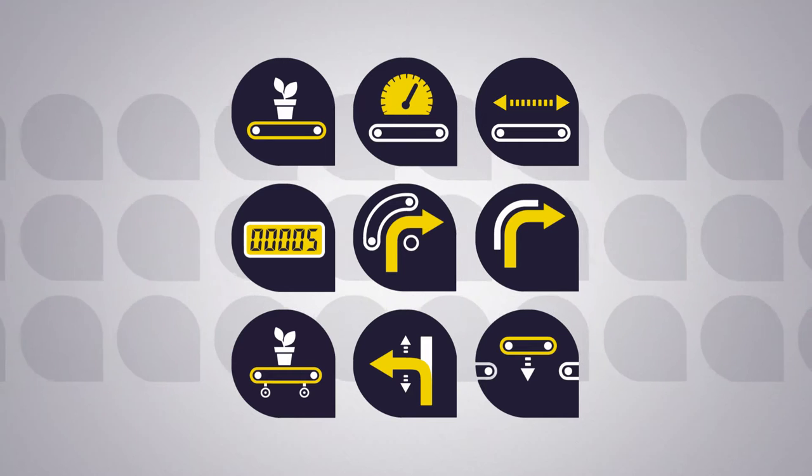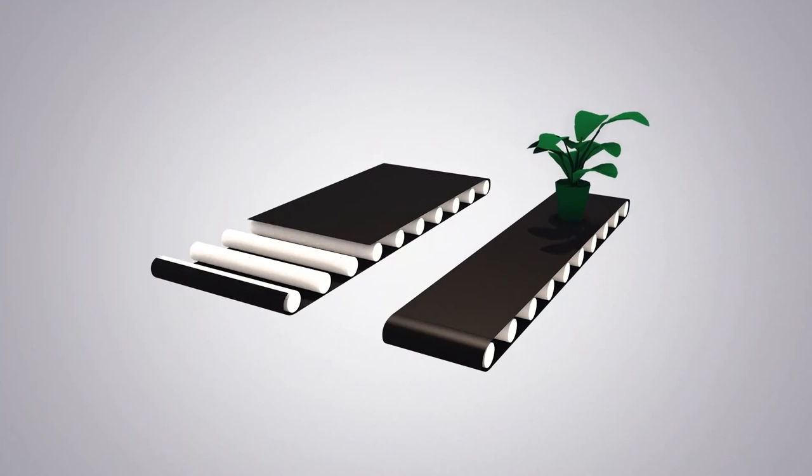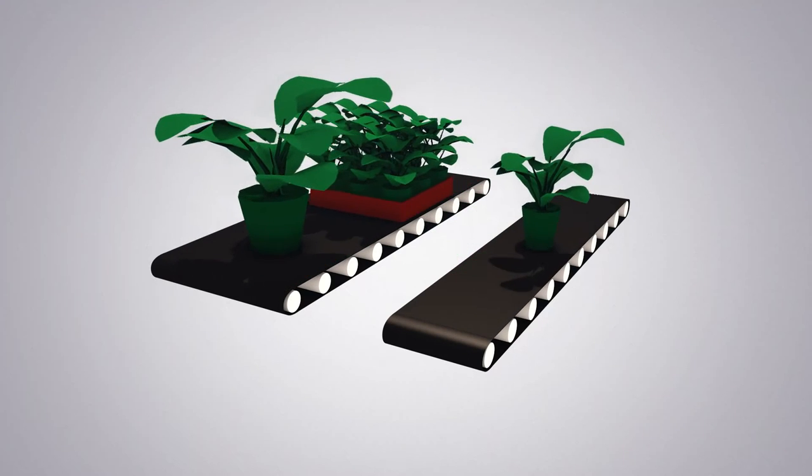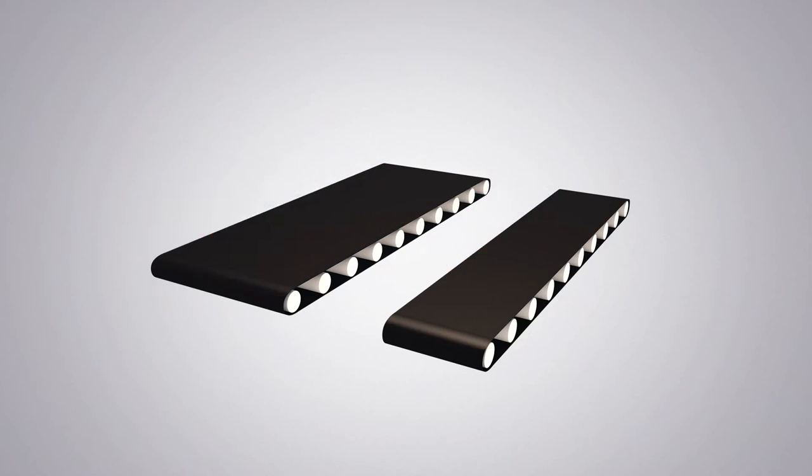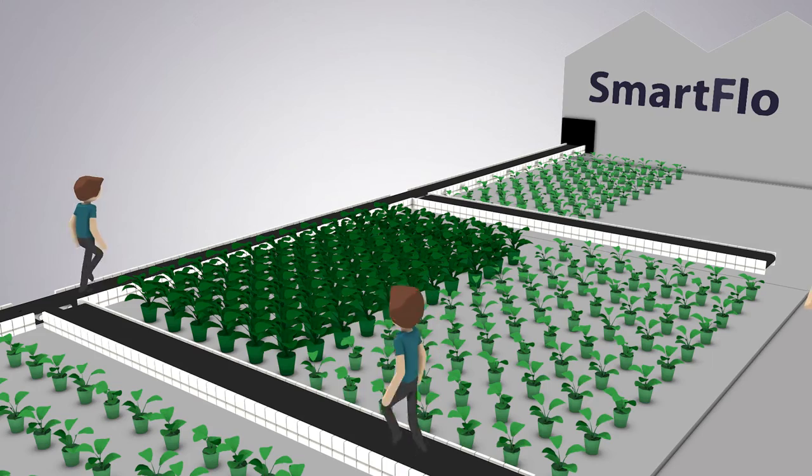SmartFlo consists of an internal transport system with smart tools. SmartFlo tracks form the basis, and they're available in a variety of sizes to enable you to move pots and trays safely from point A to point B. The tracks can be walked upon in order to gain access to each plant.